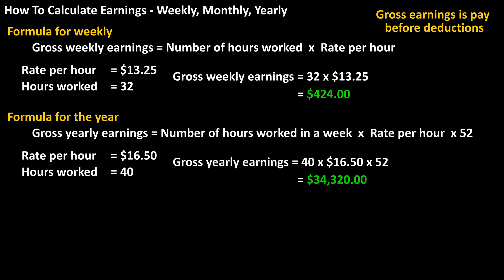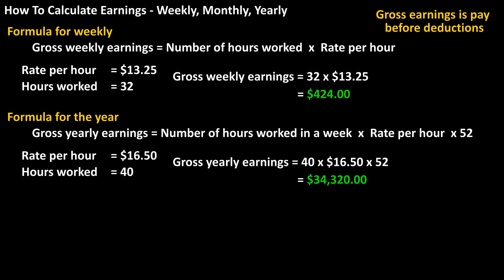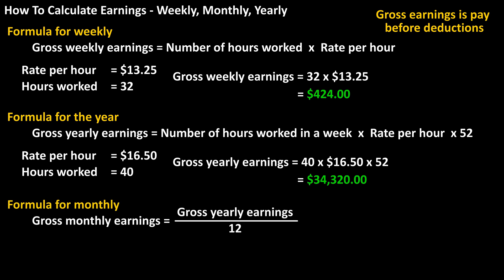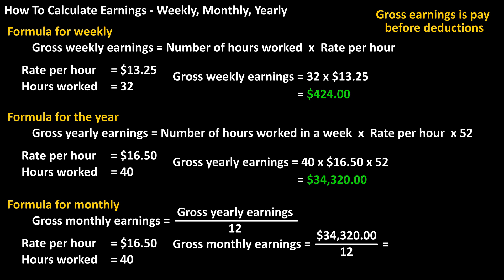To calculate monthly earnings, you take the yearly earnings and divide by 12 for 12 months. Using the previous example, which calculated to $34,320 per year, we take $34,320 and divide by 12, which equals $2,860 as the monthly earnings.